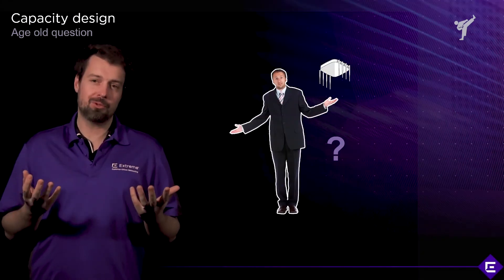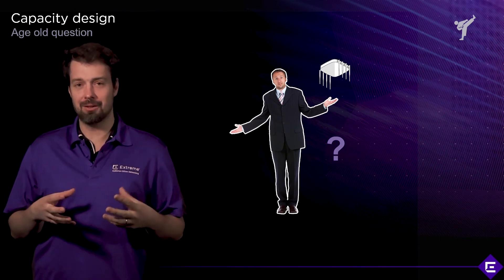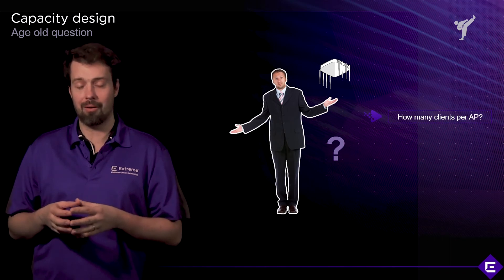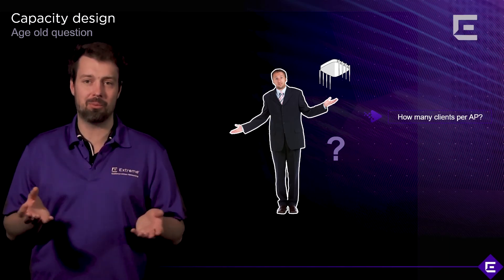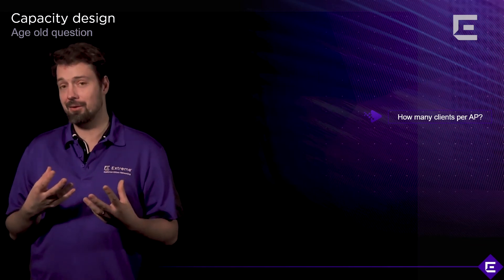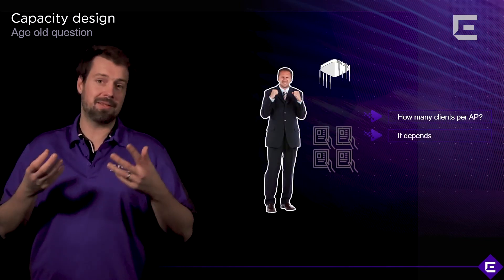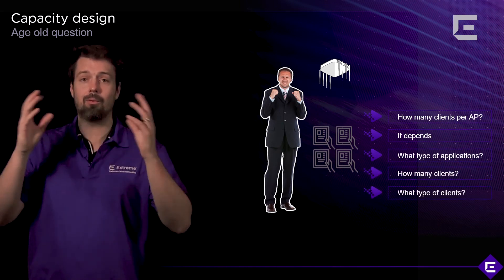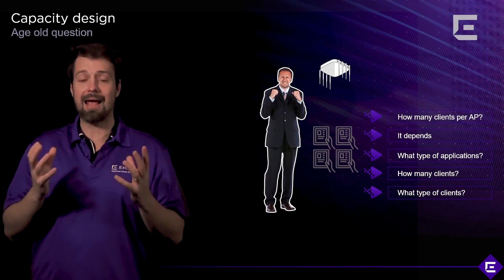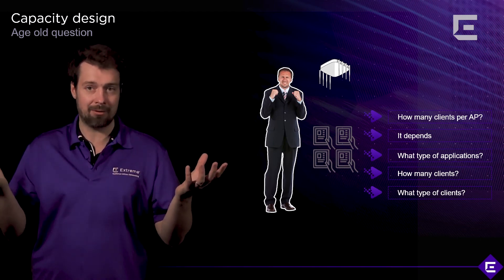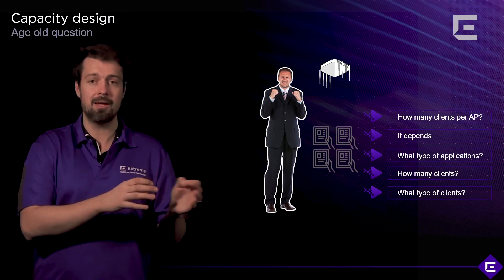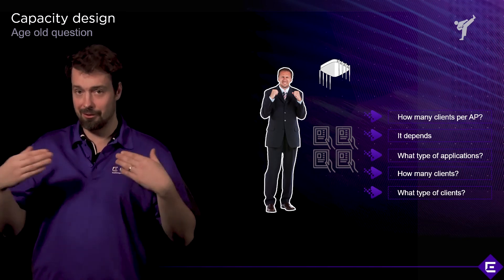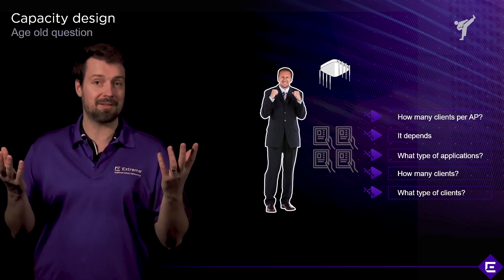When we move to a capacity-based design, the question is: how many clients per AP should I use, or how many clients can an AP support in this design? Unfortunately, the answer is it depends — on the types of applications you're using, on the types of APs, and the types of clients. They all form an ecosystem, and this ecosystem is your wireless LAN network. It's not just the access points, it's not just the clients — it's both working together, and the applications they're using will determine your capacity plan.